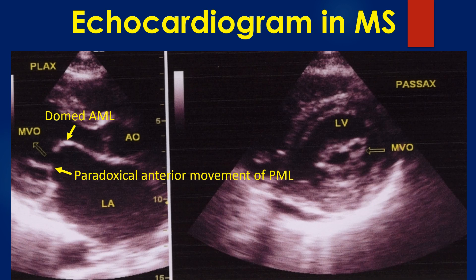Paradoxical movement of the posterior mitral leaflet is also visible. Normally, the posterior mitral leaflet moves posteriorly in diastole. Here there is a paradoxical anterior movement due to commissural fusion. The left atrium is dilated.